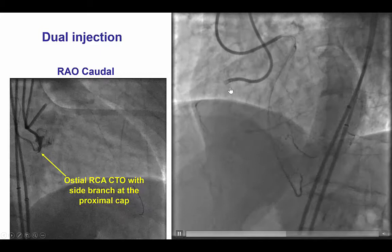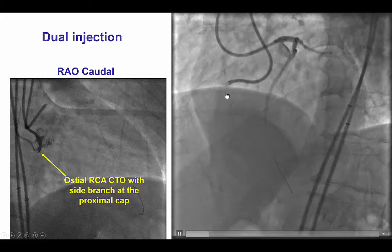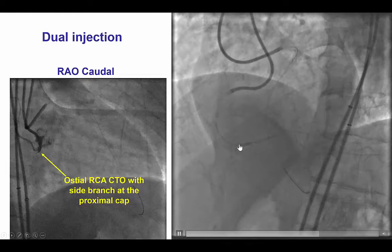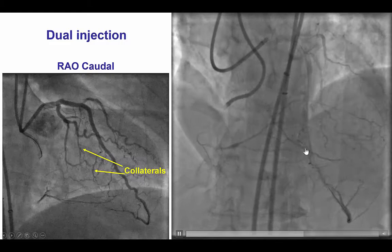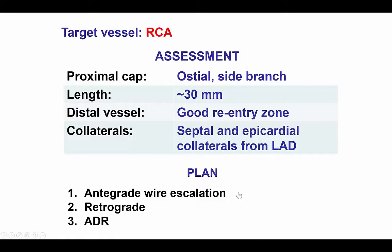The images here are from the dual injection, and because of severe dampening of the right guide catheter, there was no antegrade injection. There is filling of the distal right coronary artery, which is a large caliber vessel, done mainly via septal collaterals as well as some epicardial collaterals from the circumflex.